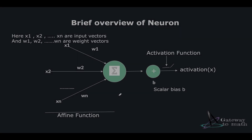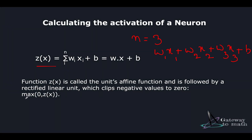Going back to the previous slide, z(x) is meant to pass through an activation function. The activation function we're using here is a rectified linear unit. This ReLU function takes two arguments, 0 and z(x), and returns the maximum of the two values. So if z(x) was negative, the output would be 0. If z(x) was positive, the output would be the positive number itself.